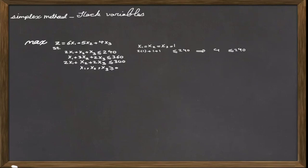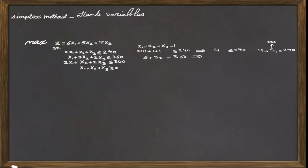Now, to change the inequality to an equality sign, we need to add some amount to the left-hand side of this constraint. Although, for this feasible solution, we can calculate this amount and it is 236, to initiate solving an optimization problem, we show this amount by a decision variable called s — unknown because the value of s is dependent on the value of x's and we don't know the value of x's at the optimal solution. By introducing slack variables, we change all the inequalities to equalities. In the second constraint, if I replace x's in the inequality, the value of the slack variable for the second constraint will be 355. And if I do the same thing for the third constraint, the value of the slack variable will be 295.